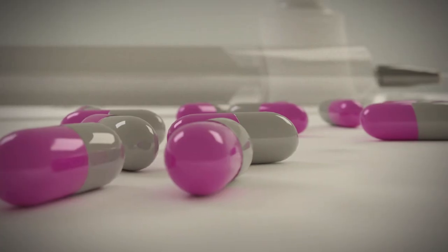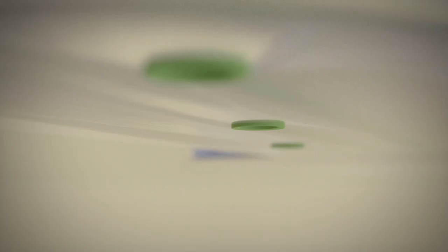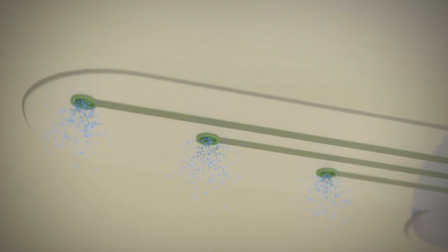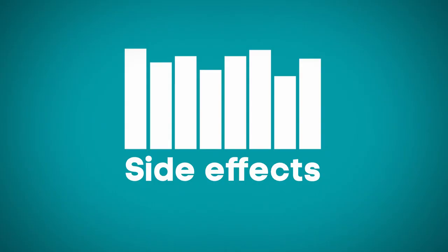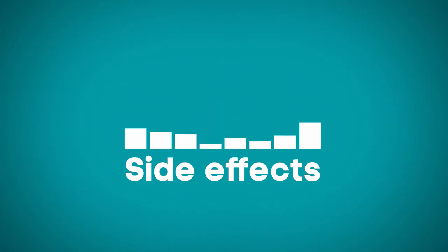Instead of swallowing a pill or injecting a fluid, the ion pump dispatches only the charged drug molecules electronically and directly to a specific group of cells or region of your body. With this precision, it is possible to greatly reduce or even eliminate many of a drug's unwanted side effects.